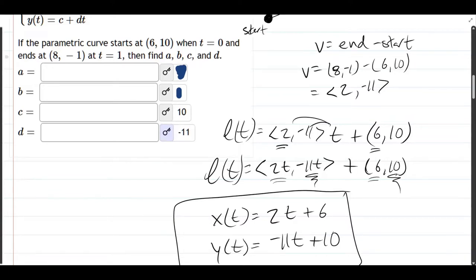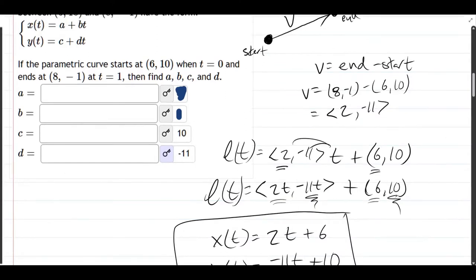And then a and b serve the same purpose, but for the x equation. So for x, a is the constant, so that's the number 6. And then b is the coefficient in front of t. And for us, that was 2.